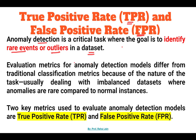So let's begin with this lecture. Evaluation metrics for anomaly detection models differ from traditional classification metrics like we have discussed in previous lectures — such as root mean squared error, mean absolute error, or mean absolute percentage error. Because here the nature of the task usually involves dealing with an imbalanced dataset where anomalies are rare compared to normal instances.